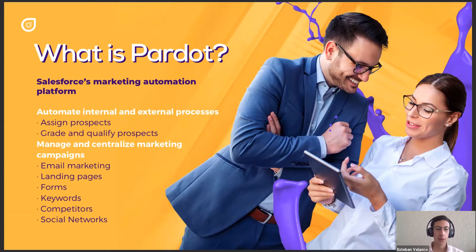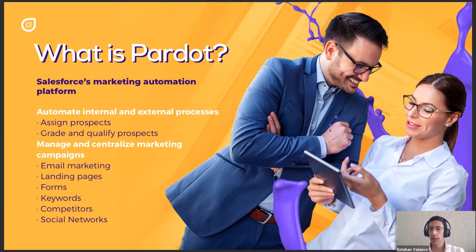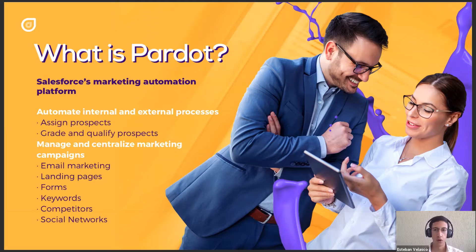Pardot is the sales-first marketing automation platform. It will help you automate internal and external processes. Some examples of internal processes you can automate are things like assigning prospects — for example, when you're running a campaign on Google Ads or Facebook Ads, or when you're sending an email and getting new prospects filling out your forms on the website or a landing page, you can automate the process of assigning each of those prospects or leads to the sales reps in your company.